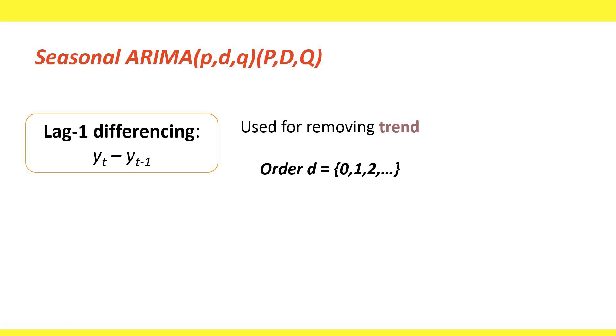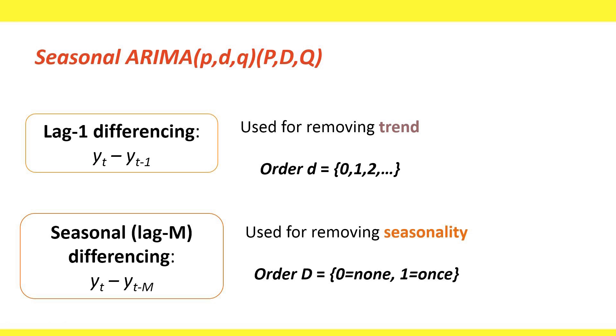The same logic applies to seasonal differencing. We can also fit seasonal ARIMA models, which have two sets of parameters, small PDQ and capital PDQ. The small d refers to the lag one differencing, and the capital D refers to the seasonal differencing.